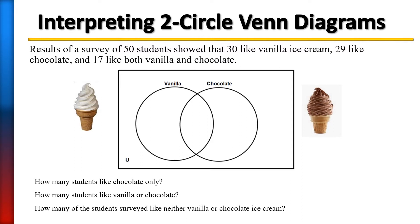Okay, so let's begin. We want to first find the intersection. It's the same as placing items — start with the intersection part first. We want to know the students who like both vanilla and chocolate. The problem states that 17 of them like both vanilla and chocolate, so we put 17 in the intersection area.